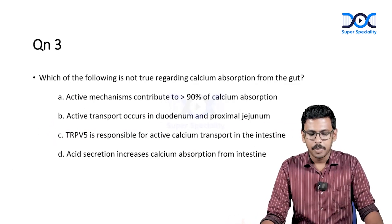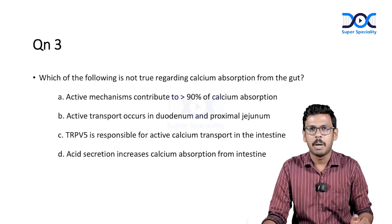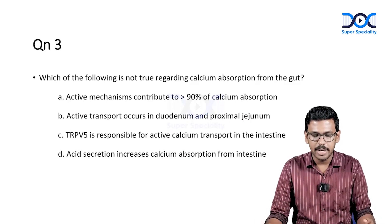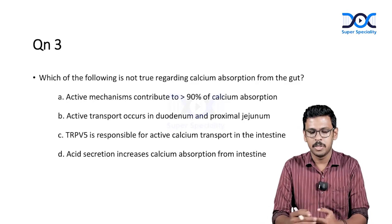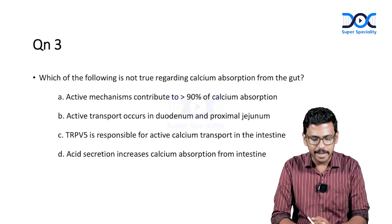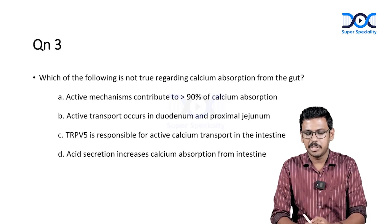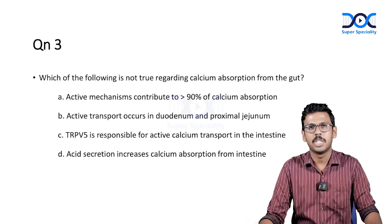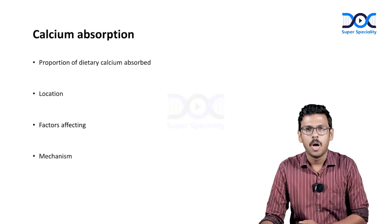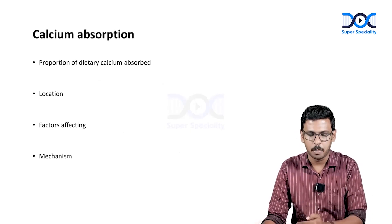Question three: which of the following is not true regarding calcium absorption from the gut? Options: active mechanisms contribute to more than 90% of absorption; active transport occurs in duodenum and proximal jejunum; TRPV5 is responsible for active calcium transport in the intestine; and acid secretion increases calcium absorption from the intestine. Let's recap the steps of calcium absorption.